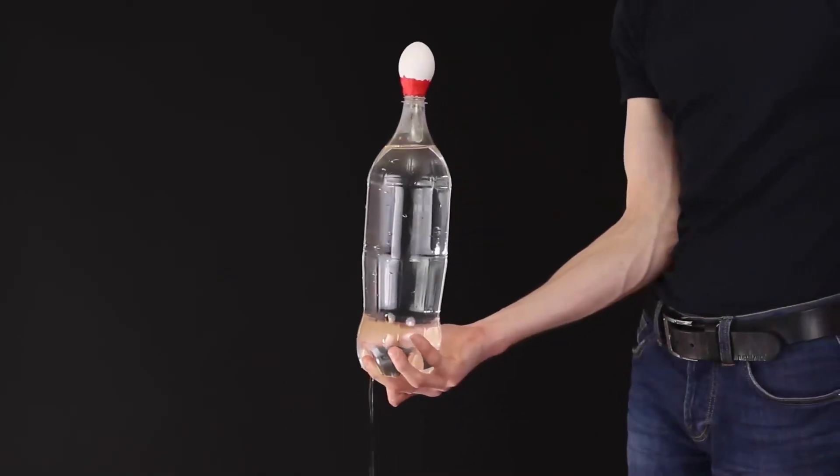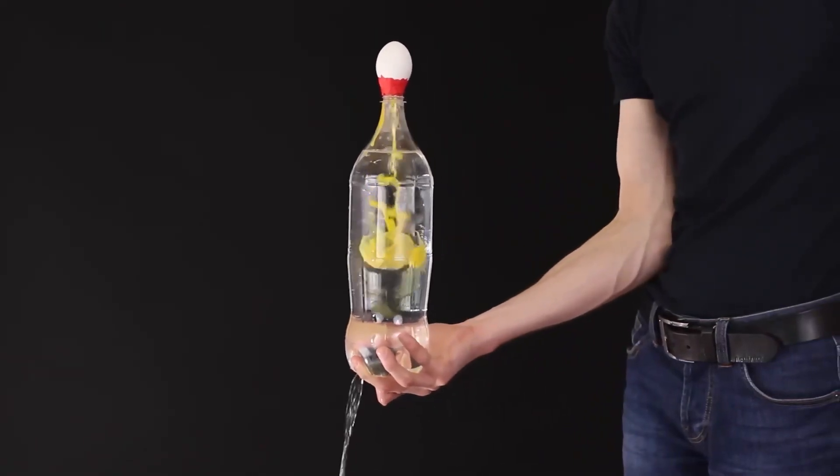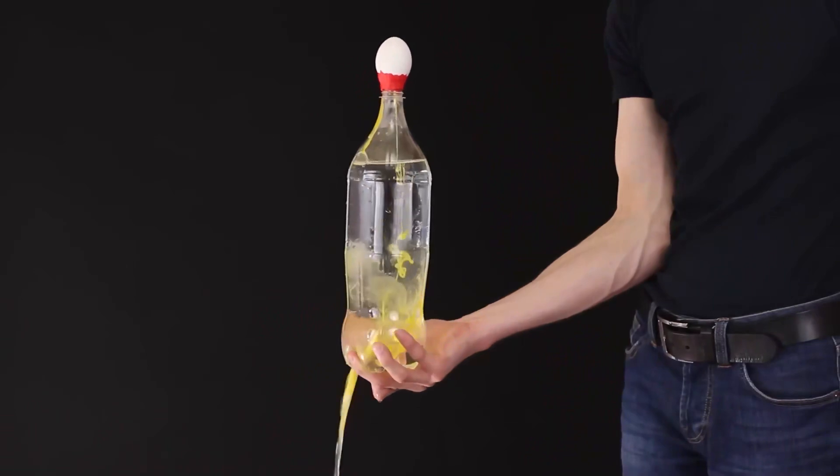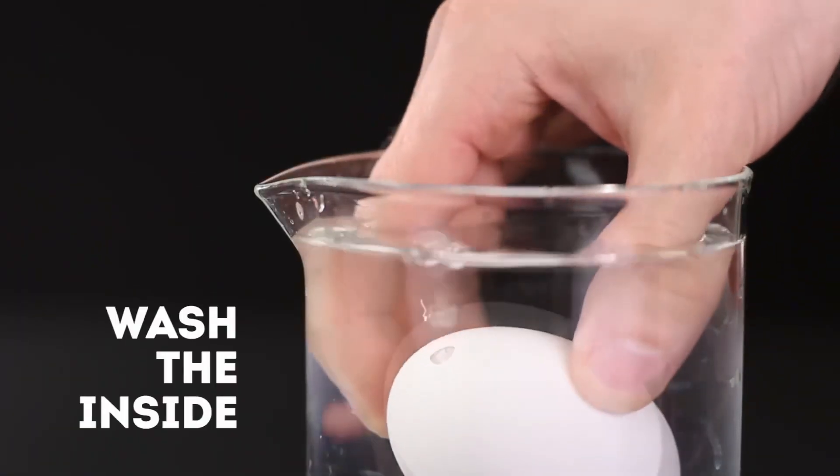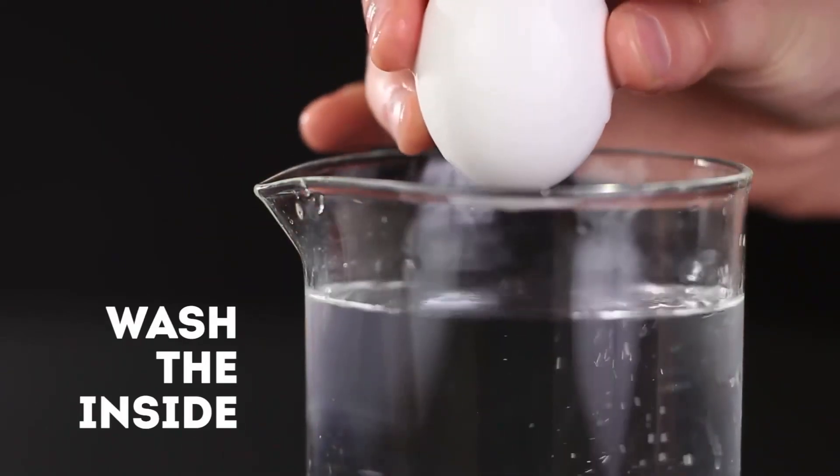And now you remove the finger from the bottom of the bottle and watch how the pressure will put out the entire contents of the egg like this. Rinse the shell in water, and to remove the remaining moisture, blow into one of the holes.